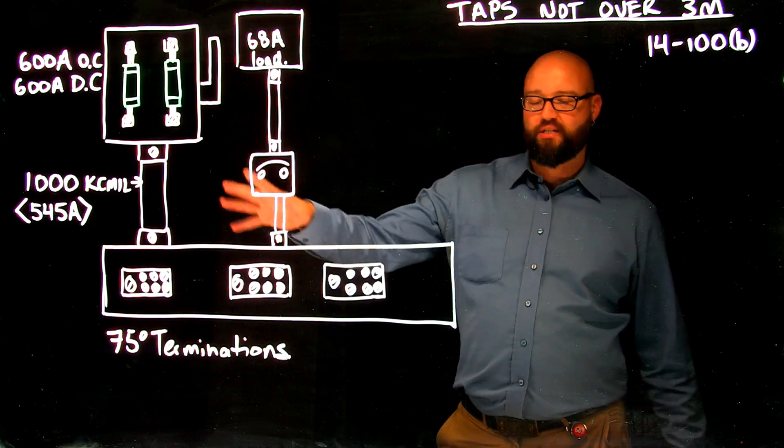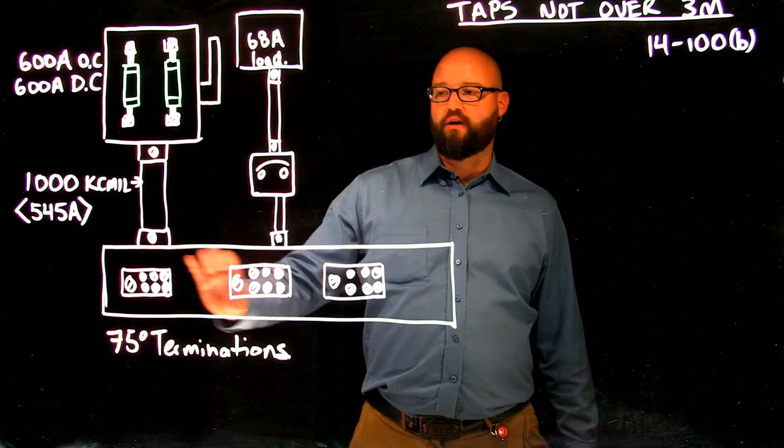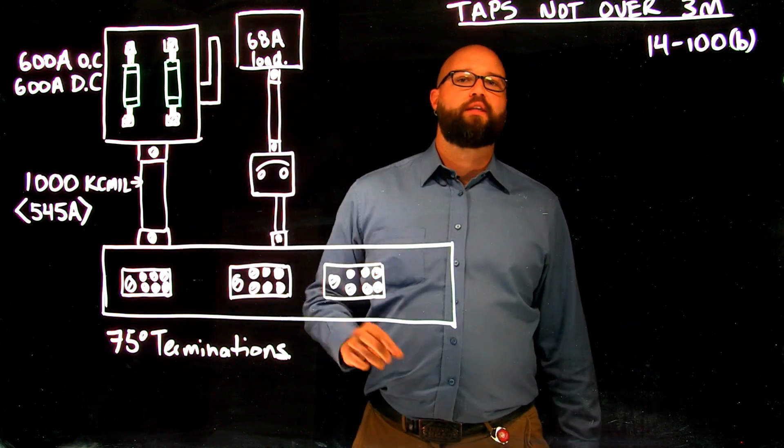So what we're looking at here is a standard electrical installation with our disconnect, our splitter, overcurrent, and then out to our load.